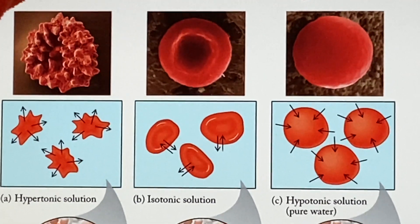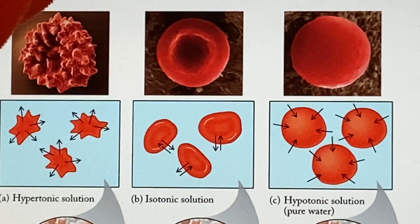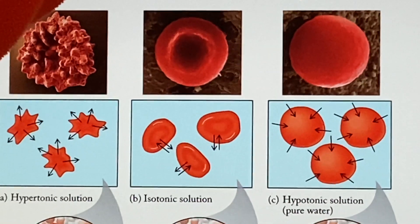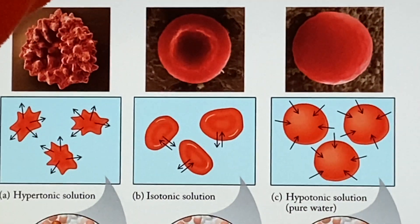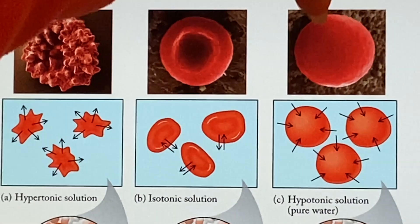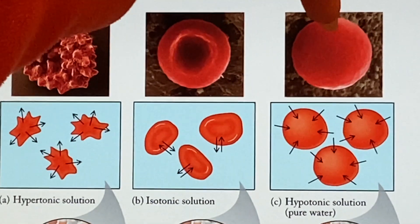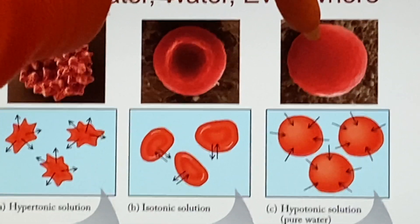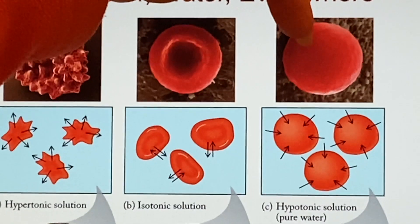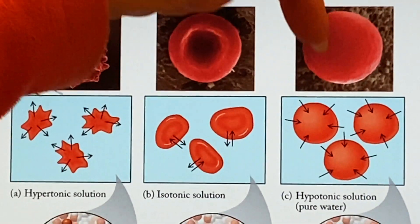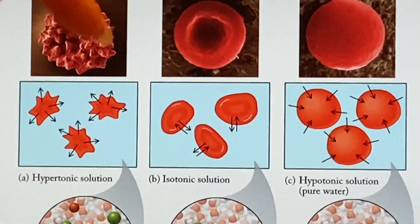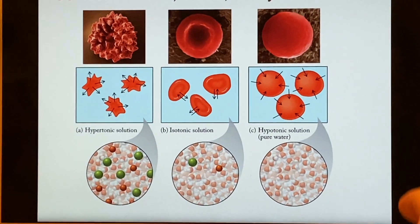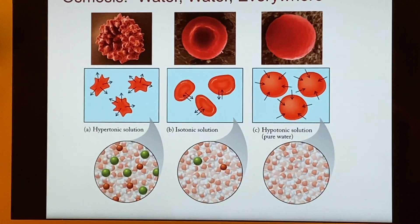On the other hand, in a hypotonic solution — much more water and much less salt — water flows into the cell and puffs it up. If it stays in this situation for too long, it may even explode, which you definitely don't want your red blood cells to do. That's very bad for you.